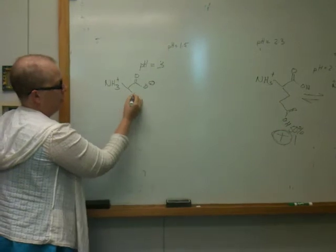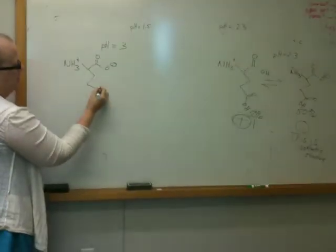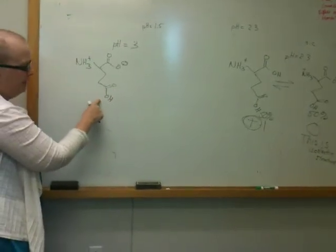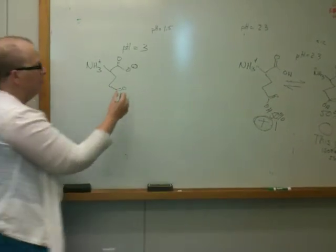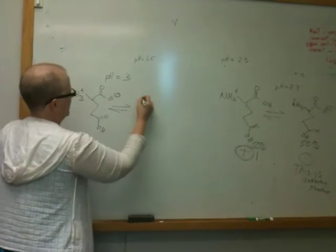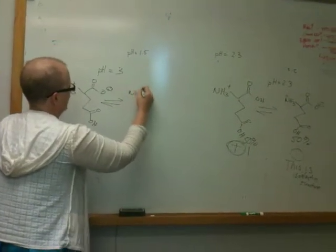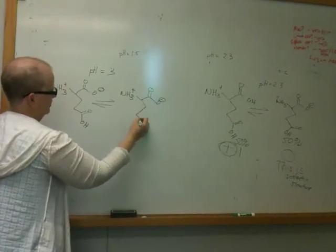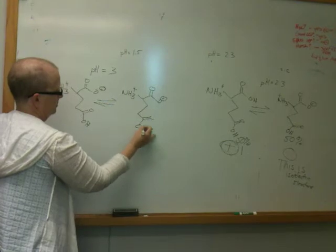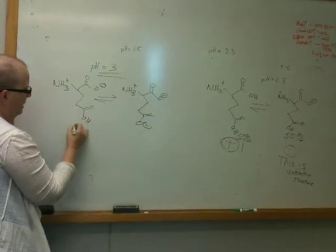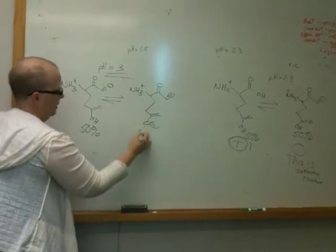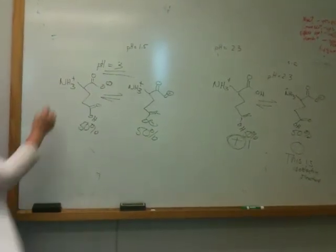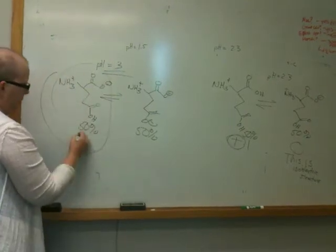This 3 is the threshold for this group. At pH equals 3, B minus is going to equal HB. So this is going to be in equilibrium with this form. And at pH equals 3, I know I'm going to have 50% of this and 50% of that. Now again, where's my isoelectric structure? This is the isoelectric structure.